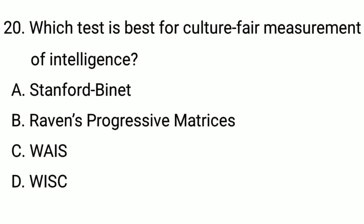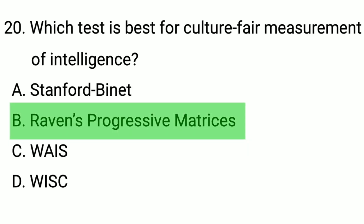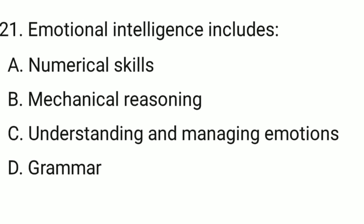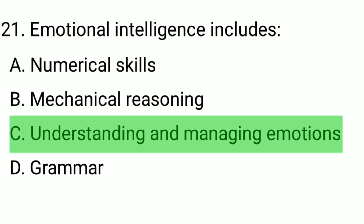Q20. Which test is best for culture-fair measurement of intelligence? The correct option is option B: Raven's Progressive Matrices. Q21. Emotional intelligence includes... The correct option is option C: understanding and managing emotions.